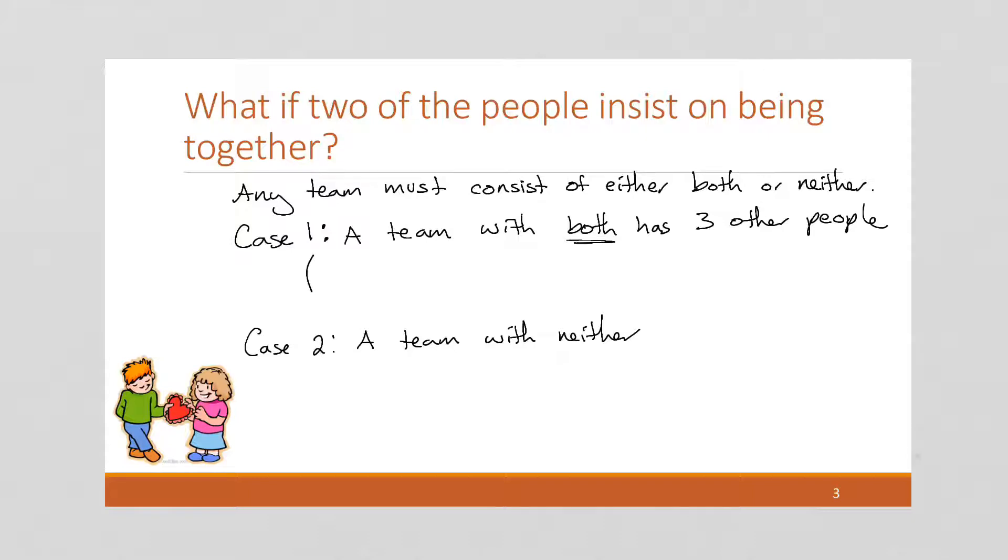The other option will be a case with a team with neither. So if the team has both, then we need to pick the other three people. So it's going to be 12 choose, or excuse me, not 12, because we've already picked two out of them. So there's only 10 left. These two lovebirds have decided they want to work together. So there's 10 left. So this is going to be 10 choose 3. And that's going to work out to 10 factorial over 3 factorial times 7 factorial, which is going to work out to 120 different ways of doing that.